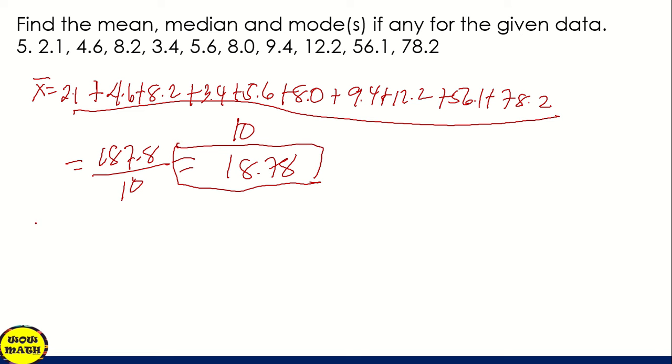Since the median, so the given is already arranged from lowest to highest, so let us identify the two middle values since this is even number. So the two middle values are 5.6 and 8.0.